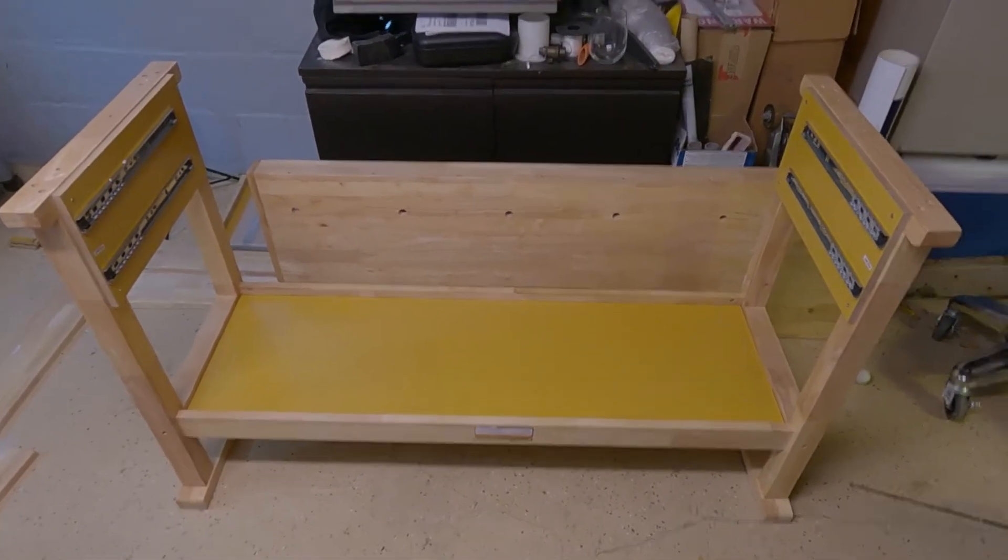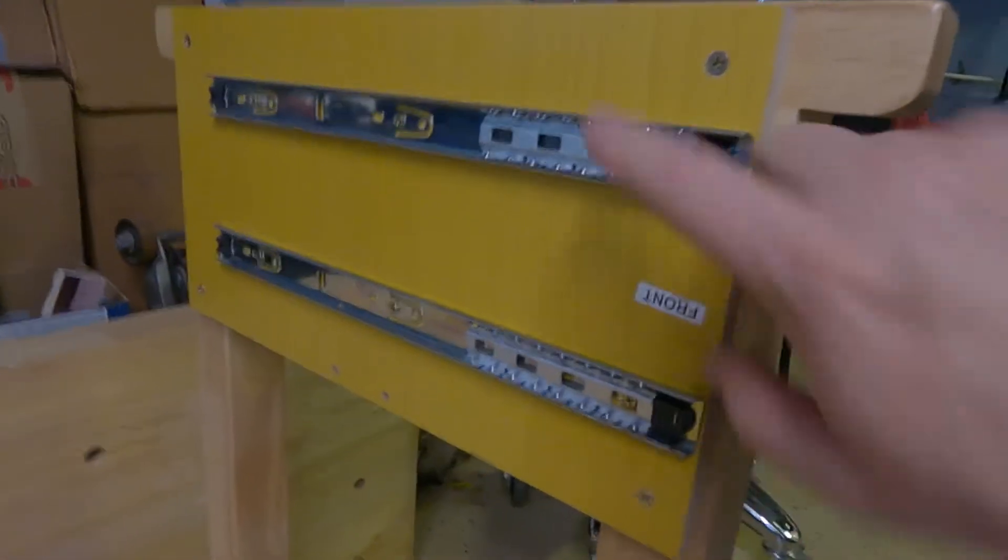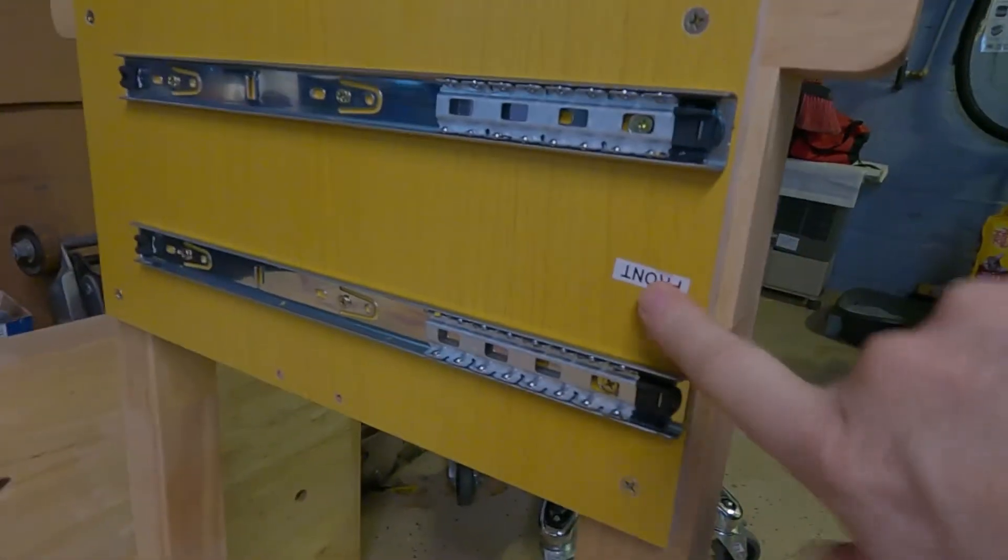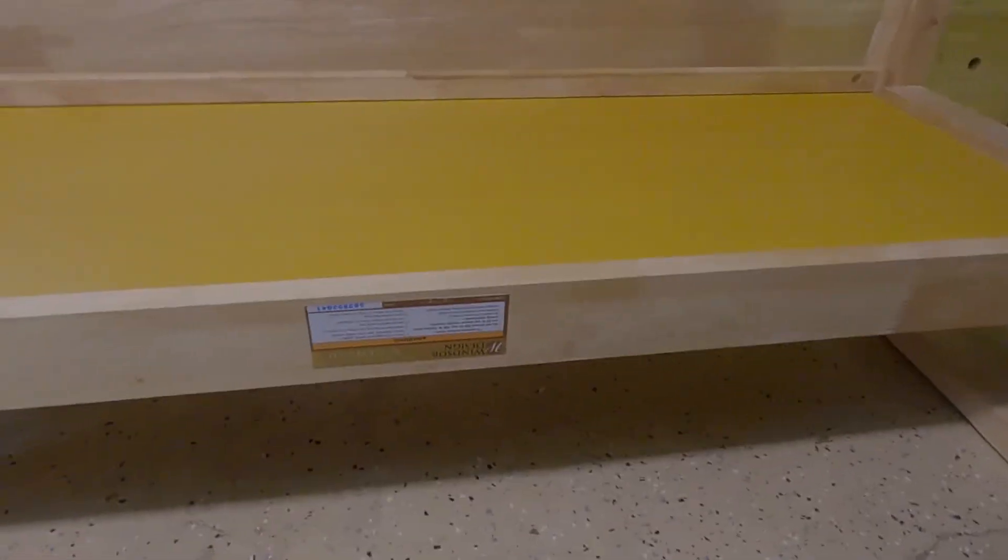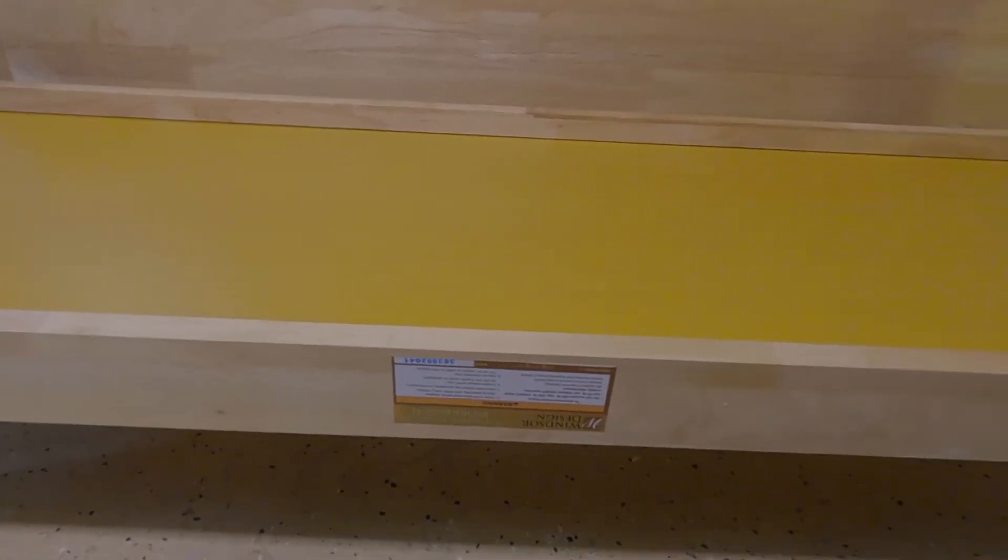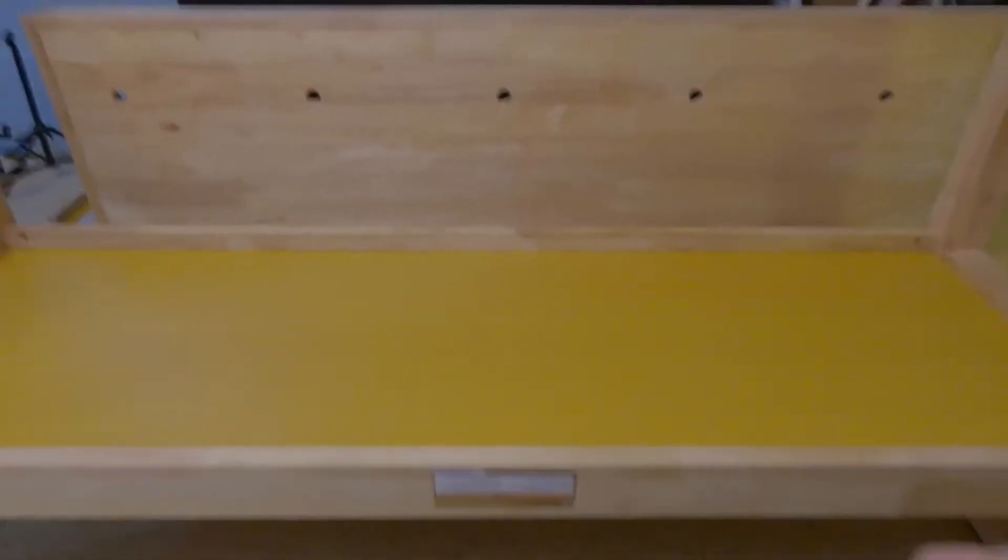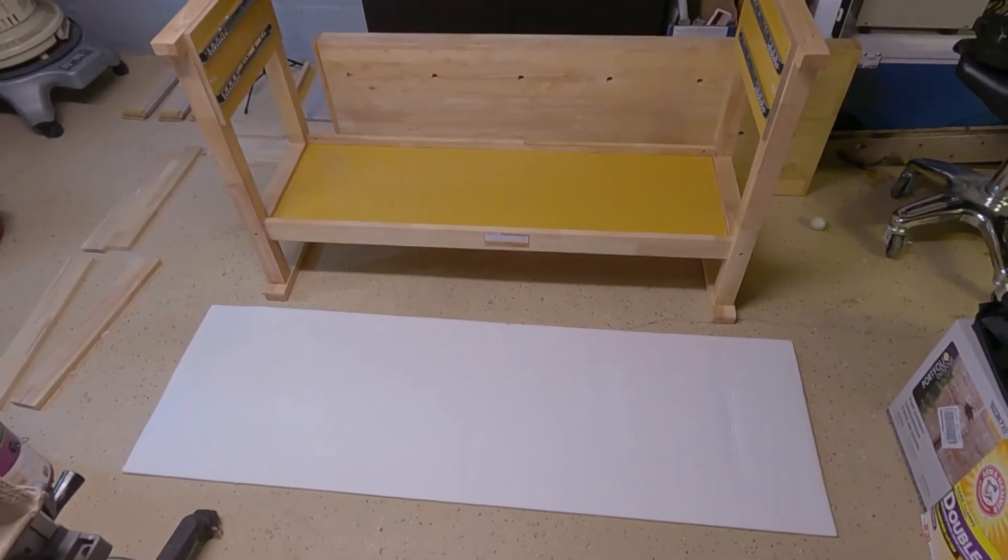Okay, starting to look good. Here's one thing you might want to keep in mind when you're choosing your cross braces: this one has this label on it and you can tell by the way the sliders work and by this little label here, but this is going to be the front of the bench. So if you would rather that not show, you would want to use this cross brace on the back. I'm not really too worried about it so I'm just going to continue on here.